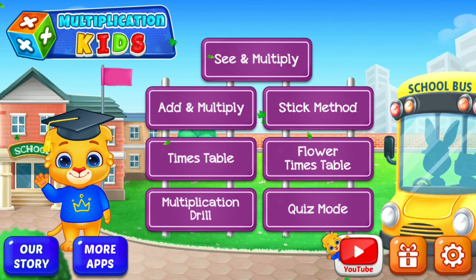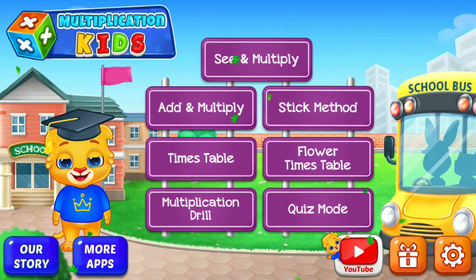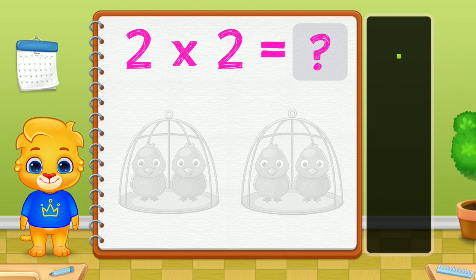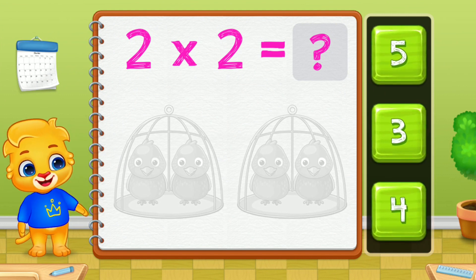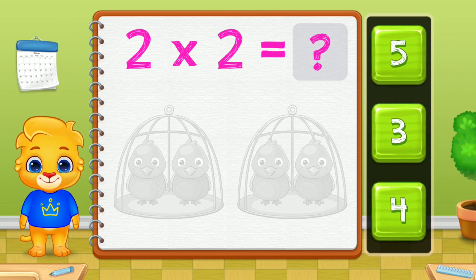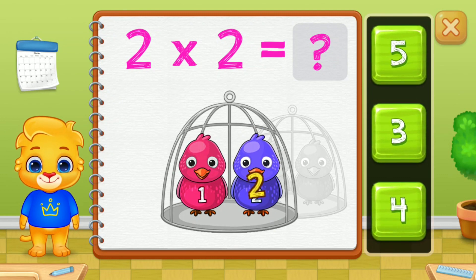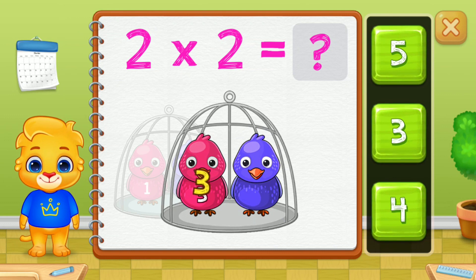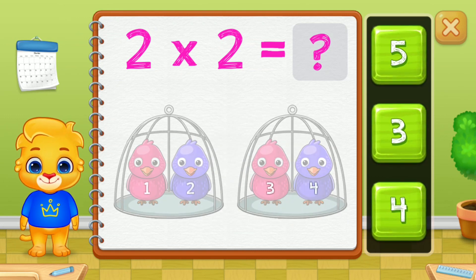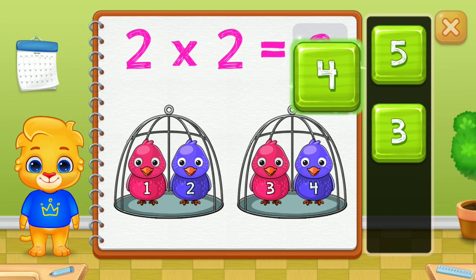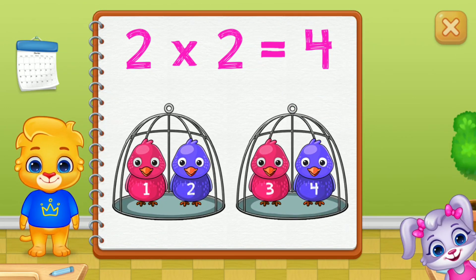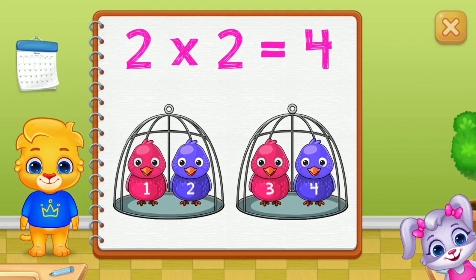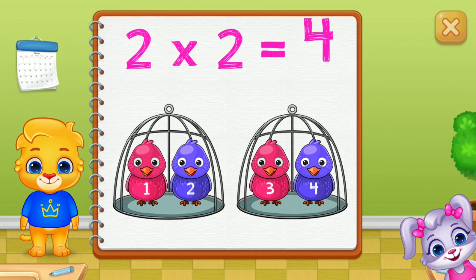Hi, I'm Lucas. Let's learn to multiply using groups. One, two, three, four. When you multiply, you are adding numbers in groups. Two groups of two equals four.